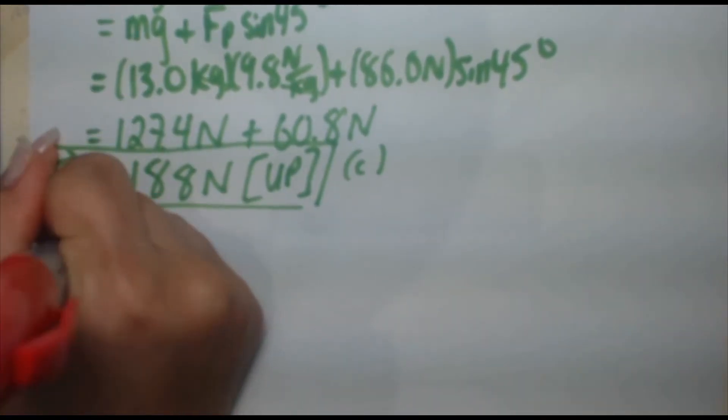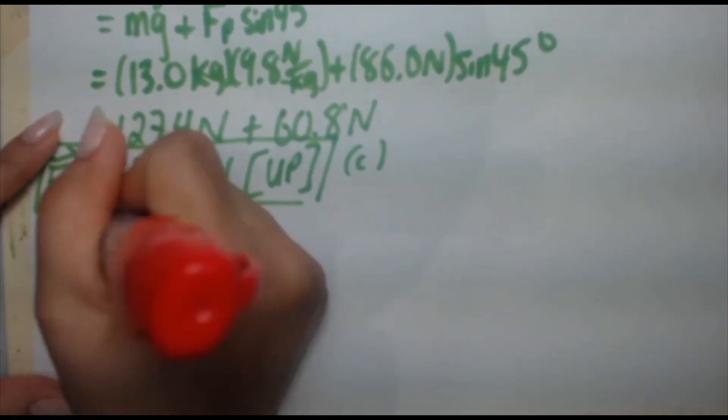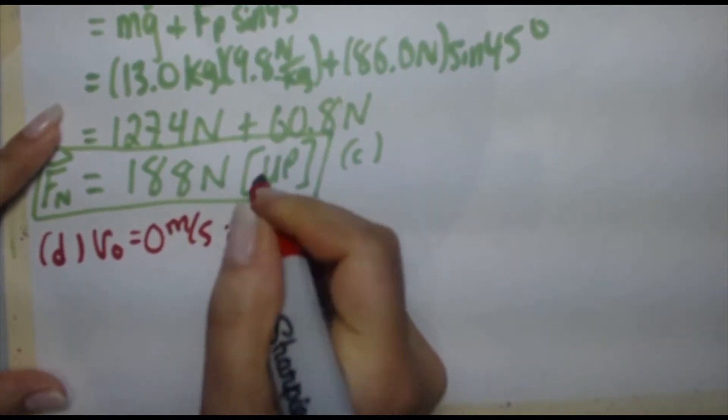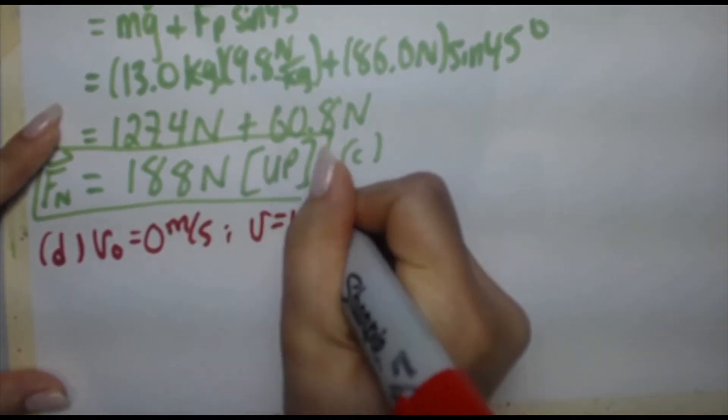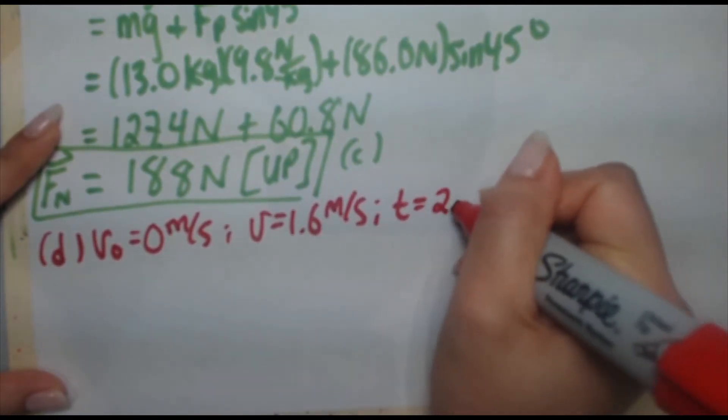So for part D, we're going to start with what we're given. We're given V0 is equal to 0 because it starts from rest. We're given our final speed of 1.6 meters per second, and we know that that takes the time of 2.6 seconds.